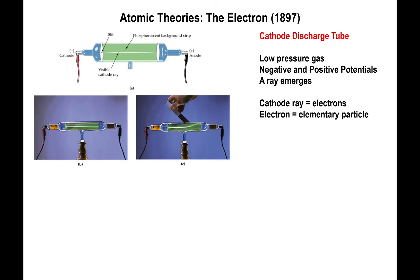Electrons are present in all of matter. The reason we reach this conclusion is that regardless of the identity of the gas inside the tube, you get the same ray the moment the potentials are applied to both ends. This seems to suggest that all of matter is composed of electrons — not entirely true, but from the point of view of chemistry, relatively true.